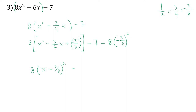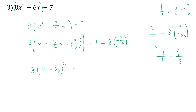The final inside expression is eight times (x minus three-eighths) all squared. Now let's work out the outside: we have minus seven over one minus eight times nine-over-sixty-four. Eight cancels with sixty-four, leaving nine-eighths. So we have negative seven minus nine-eighths. Converting seven to fifty-six-eighths, we get fifty-six-eighths minus nine-eighths.